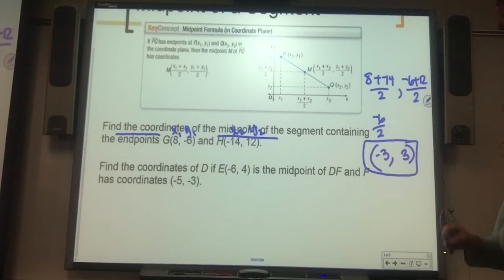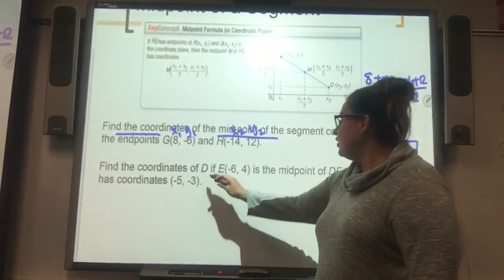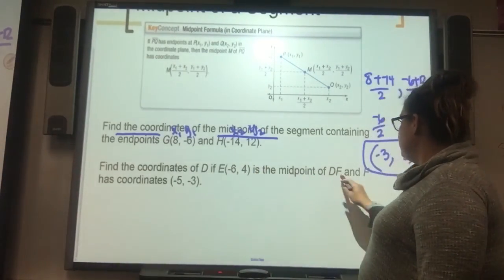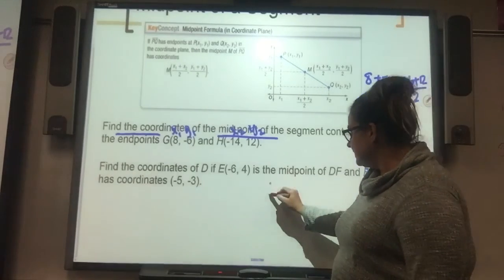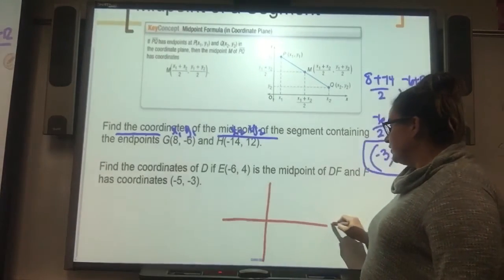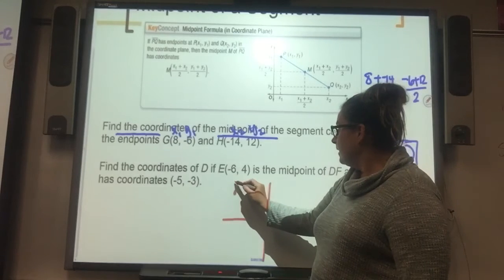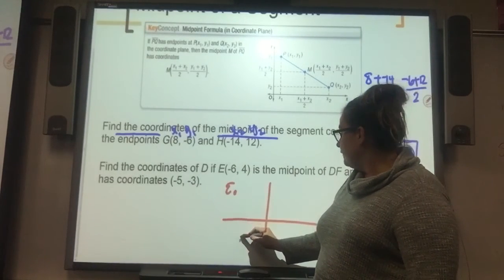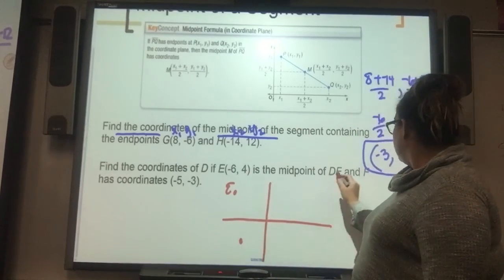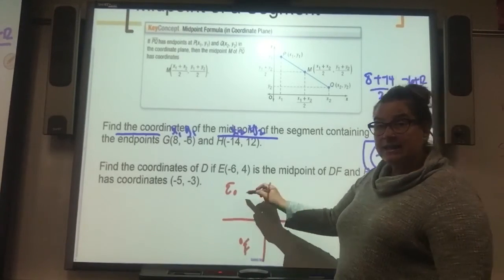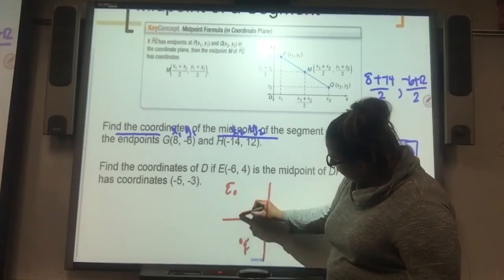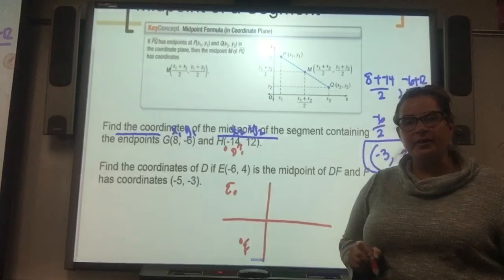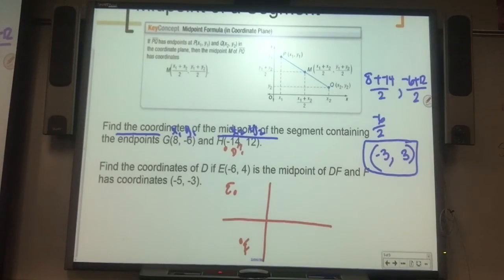Now, this next one is worded a little differently. It says find the coordinates of D if E is the midpoint. So I'm just going to sketch what this looks like. So negative 6, 4, that's E. And negative 5, negative 3, that is F. E is the midpoint. That means D is somewhere up there. So that gives me a visual representation.